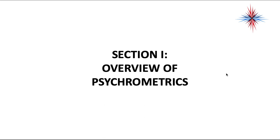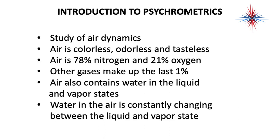We're going to talk a little bit about air in general. Psychometrics is a study of air dynamics. Air is a colorless, odorless, and tasteless substance. Air is 78% nitrogen, 21% oxygen, and other gases make up the last 1%. Air can also contain water in both the liquid and the vapor states. Water in the air is constantly changing between liquid and vapor — that's what psychometrics is all about. We're going to find out why it's important to the HVAC technician to understand this.